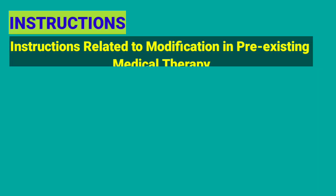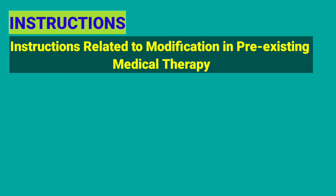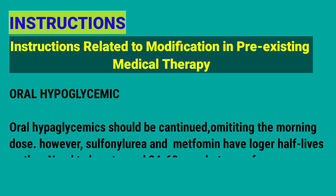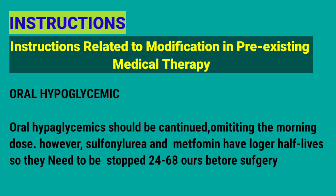Instructions related to modification in pre-existing medical therapy: oral hypoglycemics should be omitted on the morning dose. However, sulfonylureas and metformin have longer half-lives, so they need to be stopped 24 to 48 hours before surgery.